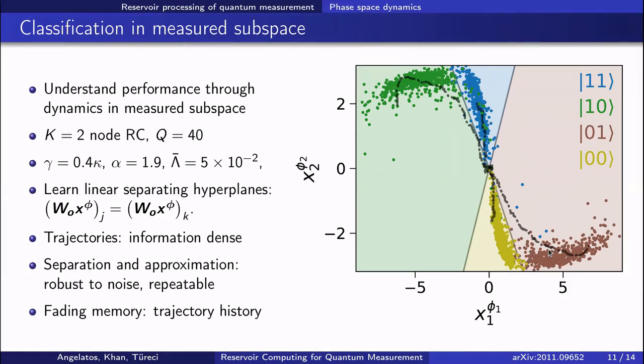Training amounts to learning these hyperplanes, or in this case lines, that separate these distributions. I've also plotted four individual reservoir trajectories in black, and even though I have not labeled them, it's clear which initial qubit states they correspond to.